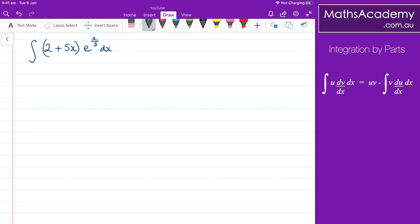The first thing I want to do here is let u equal 2 plus 5x. I need to differentiate that, so du by dx, well du by dx in this case will be 5.